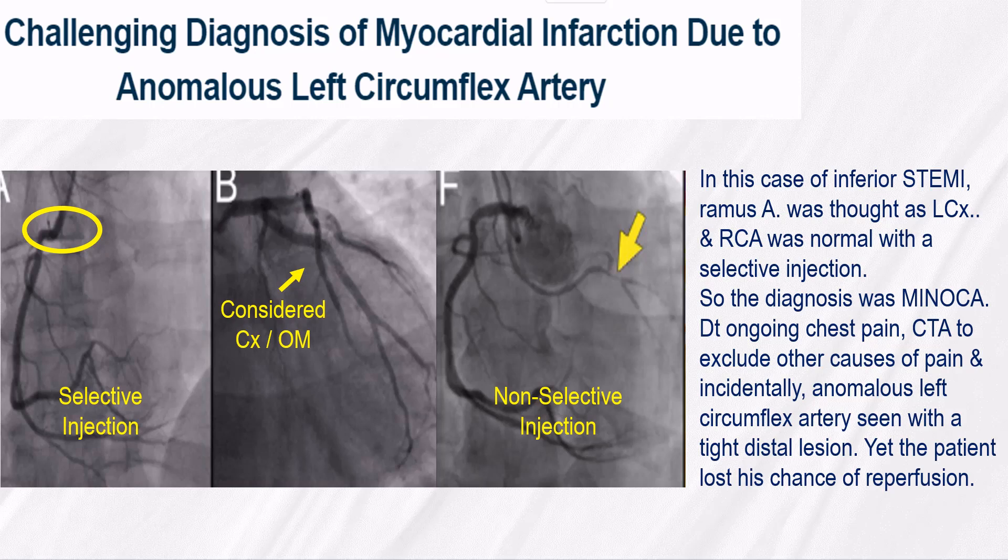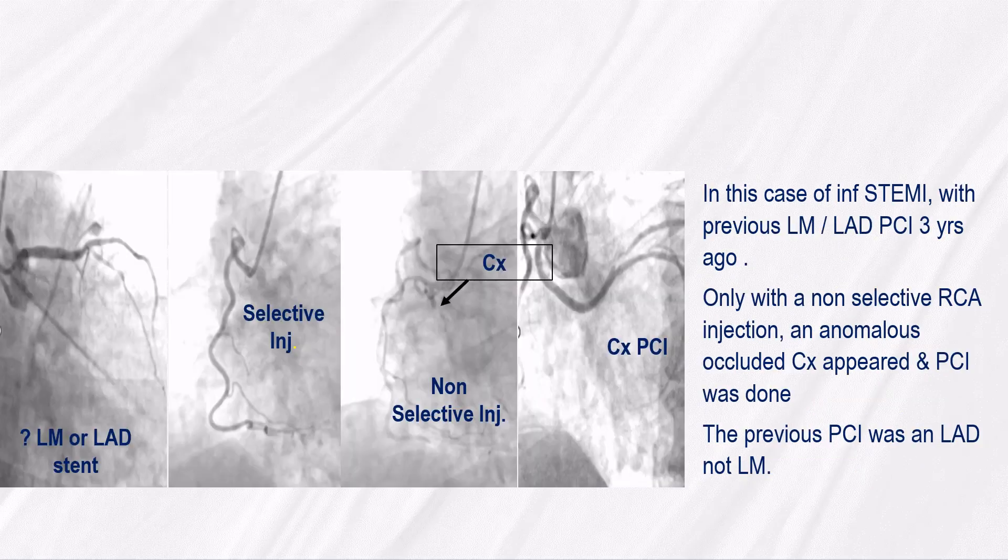This is a case of inferior STEMI. A ramus artery was mistakenly thought to be the left circumflex, and the RCA was normal with a selective injection, so the diagnosis was MINOCA. Due to ongoing chest pain, CTA was done to exclude other causes. An anomalous left circumflex artery was seen with a tight distal lesion, yet the patient lost the chance of reperfusion. In another case of inferior STEMI with previous left main LAD PCI three years ago, only with a non-selective RCA injection did an anomalous occluded CX appear, and PCI was done. The previous PCI was LAD, not left main.